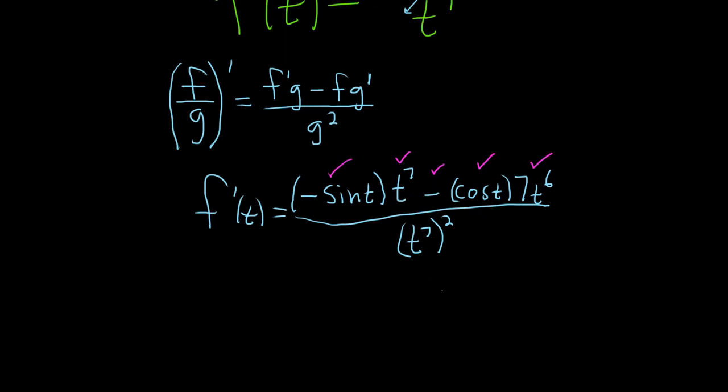So there's some stuff we can clean up here. Let's go ahead and do that. So f prime of t is equal to, so we can put the t to the 7th in the front, so it's negative t to the 7 sine t. Likewise, here we can put the 7t to the 6th in the front, so minus 7t to the 6th cosine t.